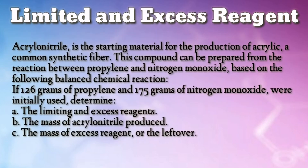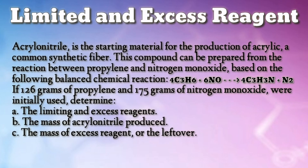Let's have the next problem. Acrylonitrile is the starting material for the production of acrylic, a common synthetic fiber. This compound can be prepared from the reaction between propylene and nitrogen monoxide, based on the following balanced chemical reaction: 4C3H6 + 6NO → 4C3H3N + N2. If 126 grams of propylene and 175 grams of nitrogen monoxide were initially used, determine the limiting and excess reagents, the mass of acrylonitrile produced, and the mass of the excess reagent not consumed.